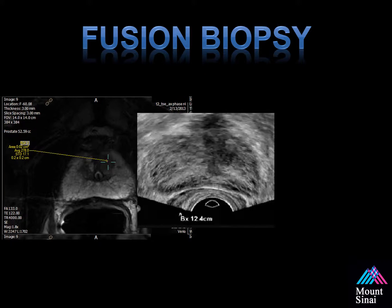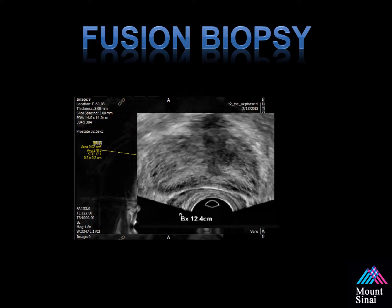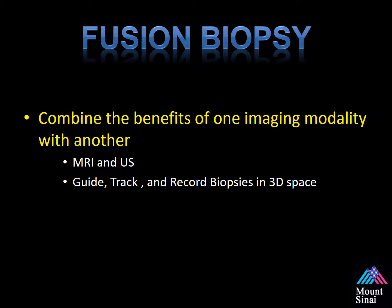This is an example of fusion. Essentially, the MRI and the ultrasound are overlaid together. You combine the benefits of one imaging modality with another. MRI has high sensitivity and specificity for detecting prostate cancer. Ultrasound is available in the urologist's office and allows for temporal resolution — real-time imaging of the gland — which combined allows us to guide, track, and record biopsies in 3D space using the tracking platforms.